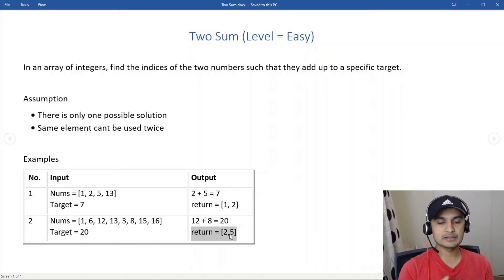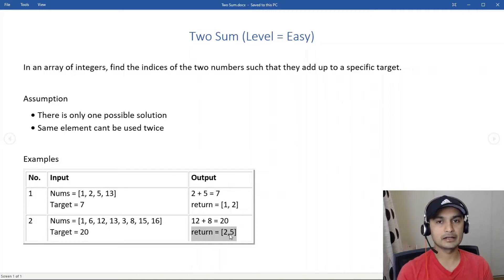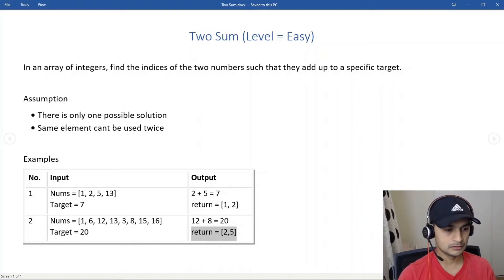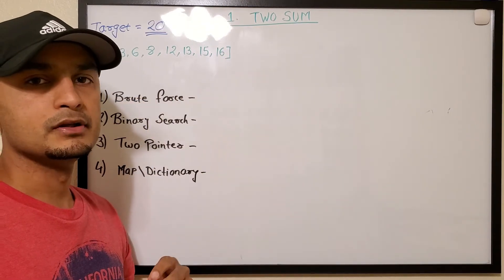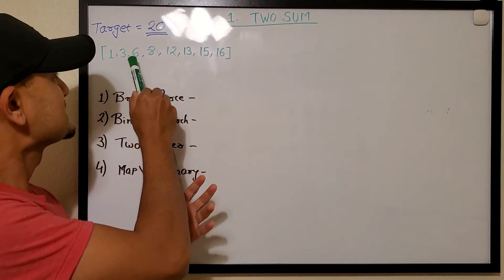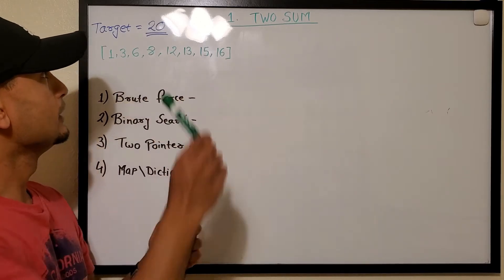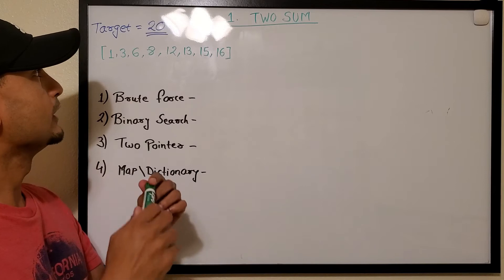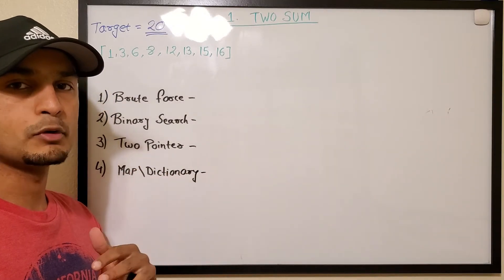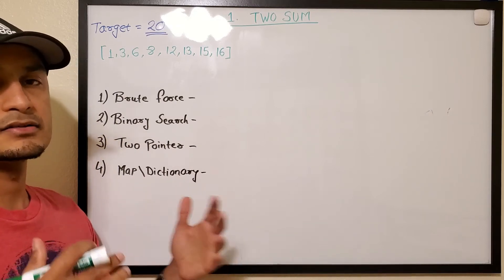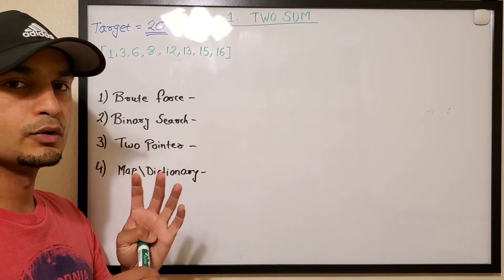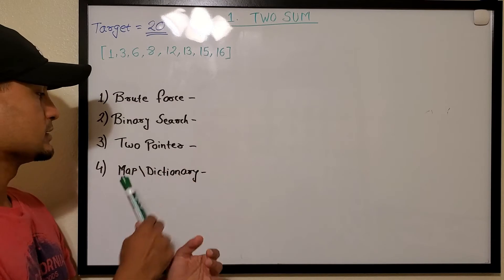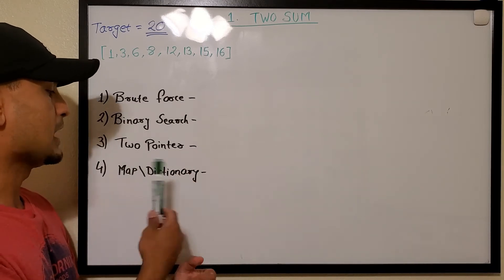Let's go to the whiteboard to look at different approaches and then come back to the final code. We'll use the array [1, 3, 6, 8, 12, 13, 15, 16] with target 20. The approaches we'll examine are: brute force, binary search, two pointer, and map/dictionary.